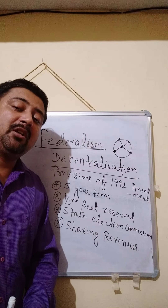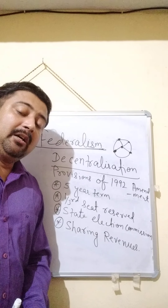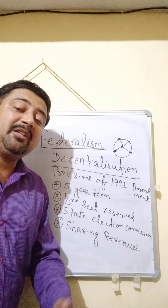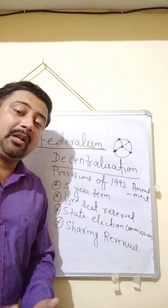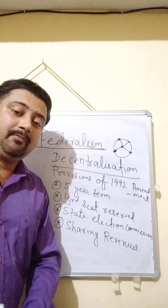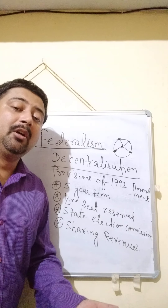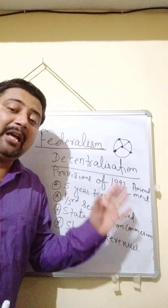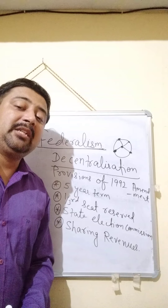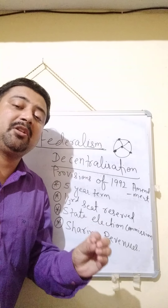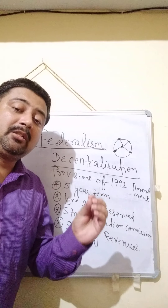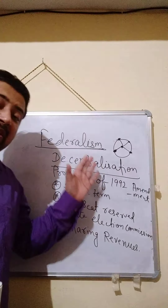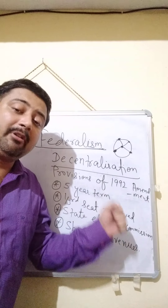One more provision was added: resources held by the state government must be shared with the local government so that it could function in an autonomous and independent manner. Without resources and money, a government cannot work. For this purpose, another body was created — the State Finance Commission — whose important function was to distribute state funds to the local government as well. This is how the provisions were made to strengthen the local government.